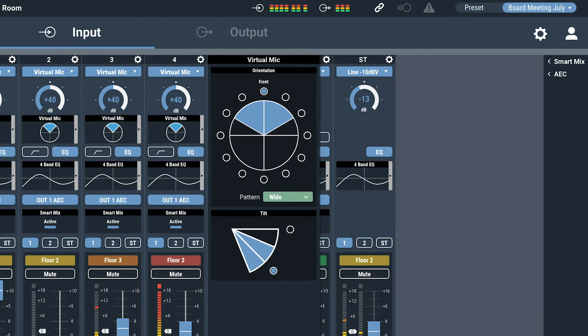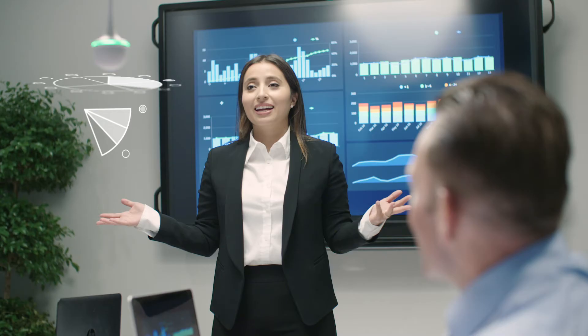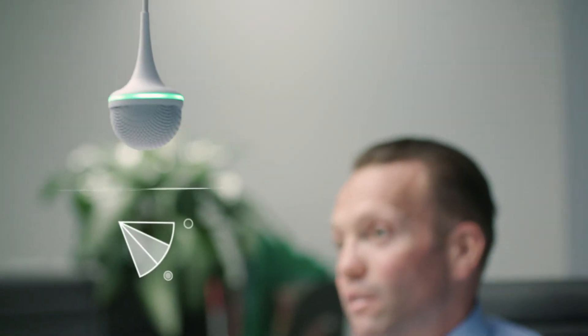ES954's mixer-controlled tilt function produces close mic sound without the need for table microphones and allows the array to be installed in rooms with varying ceiling heights.